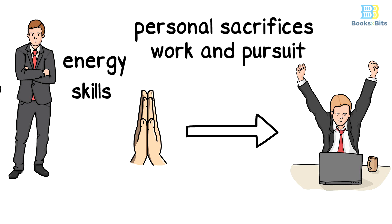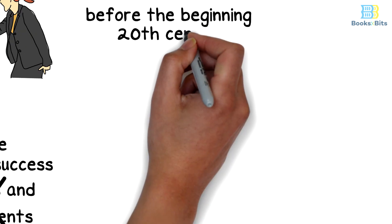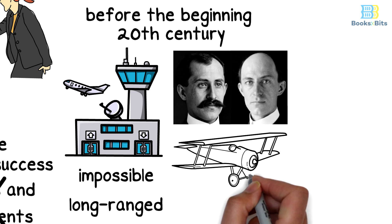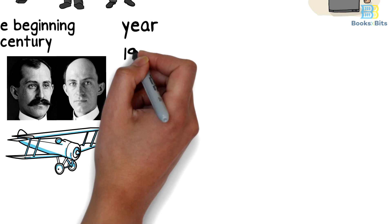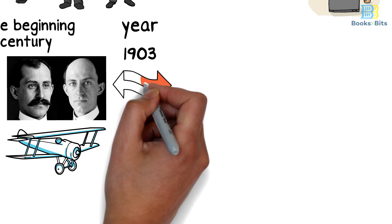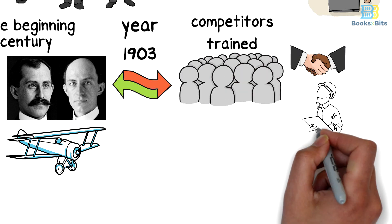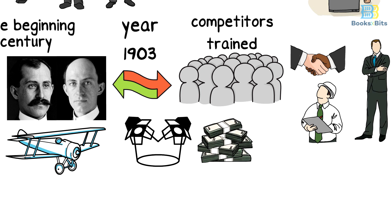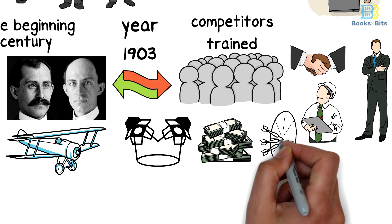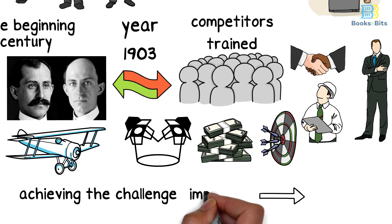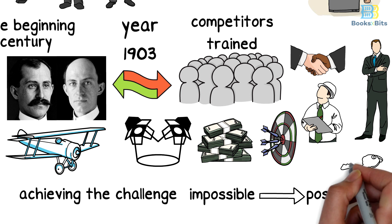Before the beginning of the 20th century, flying was an impossible and long-range challenge for humans until the Wright brothers built the first motor-operated airplane in the year 1903. Unlike their aviation competitors, the Wright brothers didn't have a trained staff nor relationships with industry giants or investors. Fame and wealth were not the key driver for the Wright brothers to achieve the dream of flying, but rather their primary drive was achieving the challenge of making the impossible possible.